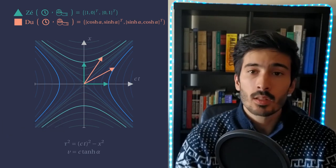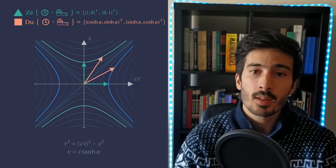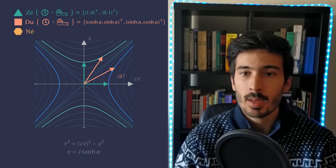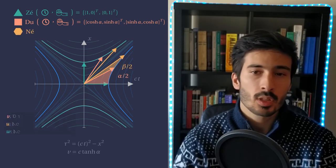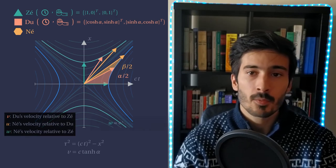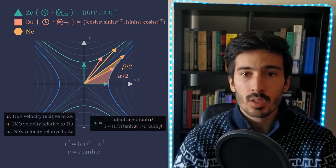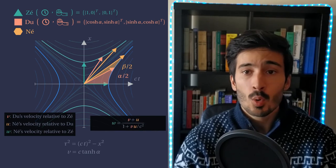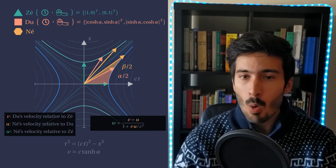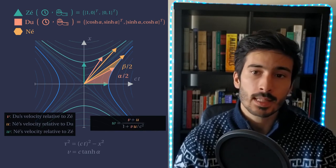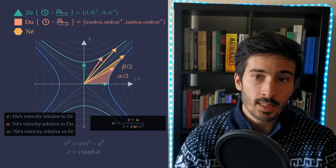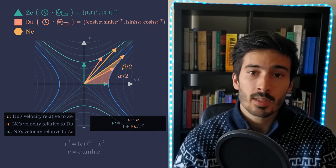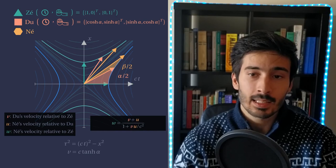Next, we take a look at the composition of velocities. We consider again Ze, Du and Ne. The relative velocities are the same as considered before. Using the same rationale, we can see that, for small velocities, it approximates the rule used in our day-to-day experience, that is, we just add the velocities. However, if the two velocities are smaller than the reference speed c, their sum is never larger than c, so we don't run into the problem of our Euclidean model.